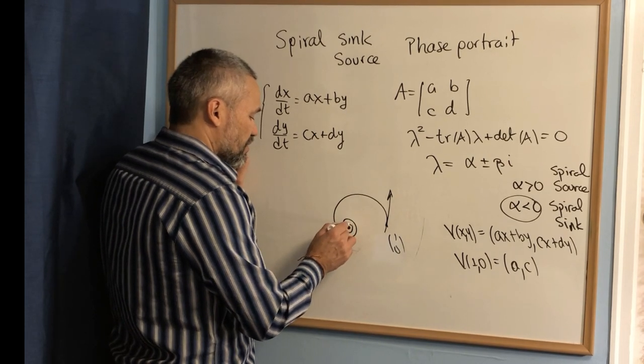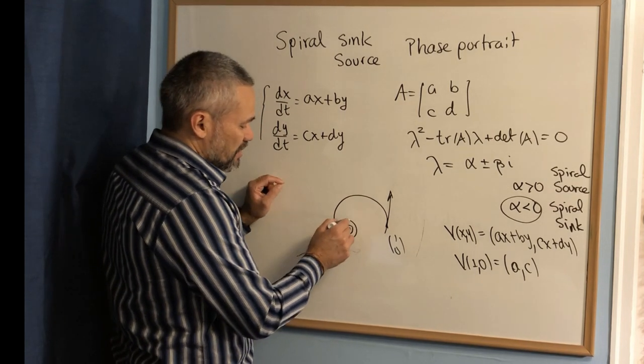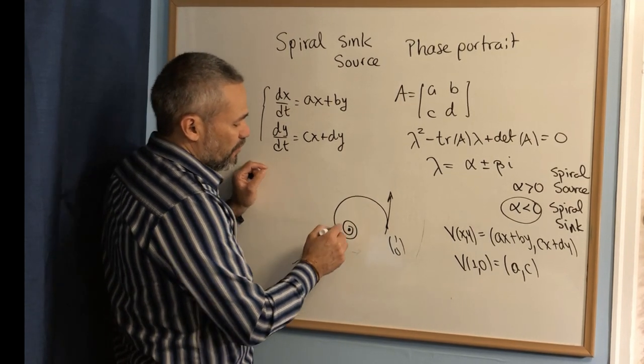Like this, right? Because the orbit is approaching. This is a sink, it's approaching the origin, and it's going to go infinitely many times around the origin.